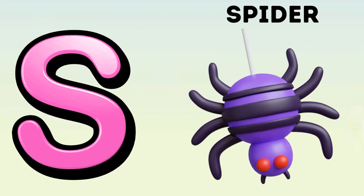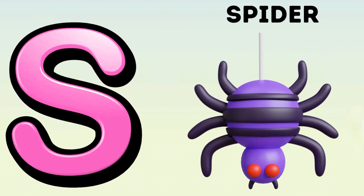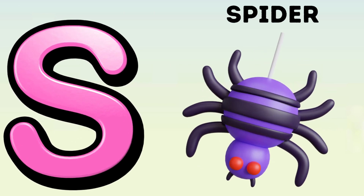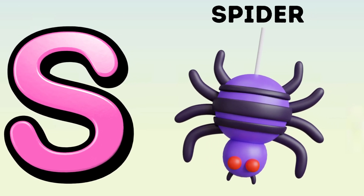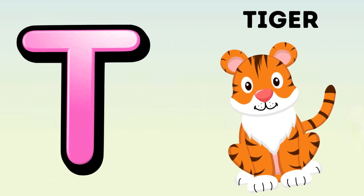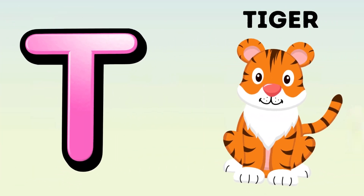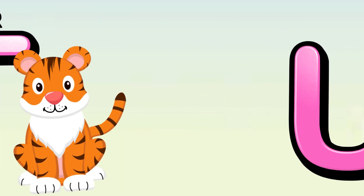Rainbow. S is for Spider. Sh, Sh. Spider. T is for Tiger. Da, Da.